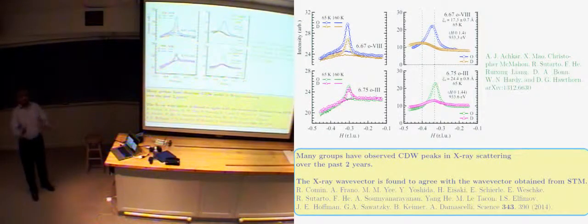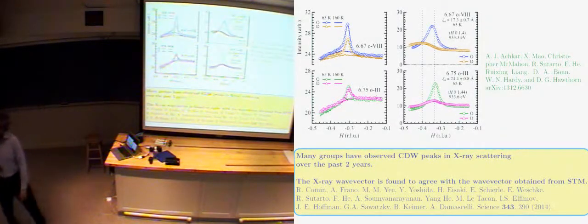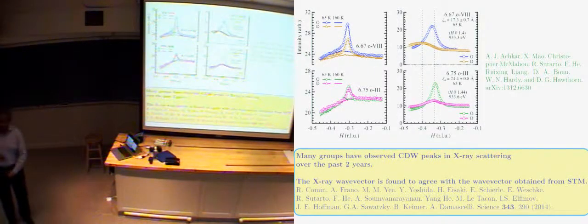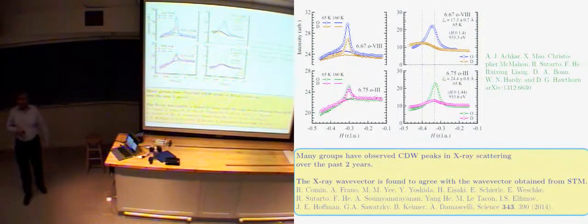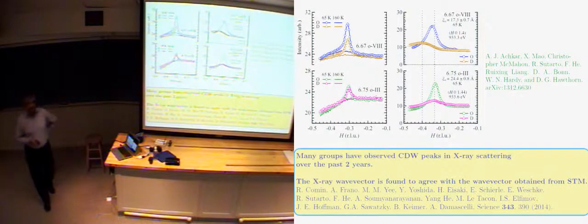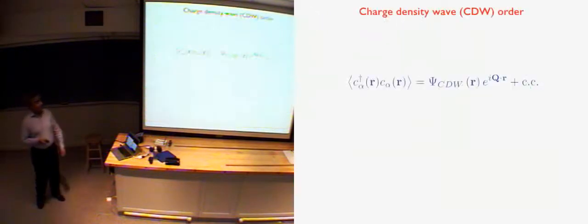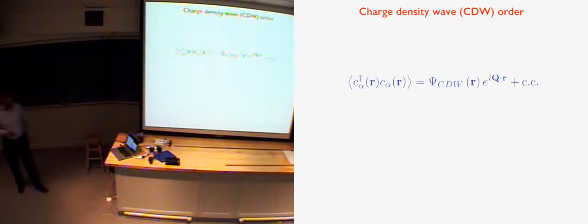Does it have a temperature dependence? Yes, it has a non-monotonic temperature dependence, and we have a paper about that. But for want of time, let me just focus on the low temperature. That has to do with the competition between the two order parameters — that's why it becomes stronger above TC than below TC. So let's just focus on the structure of this charge density wave. What is a charge density wave? It's just a modulation of the electron density with some oscillation at wave vector Q.